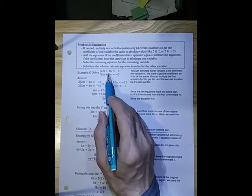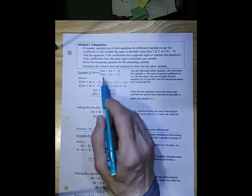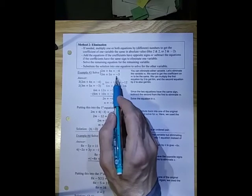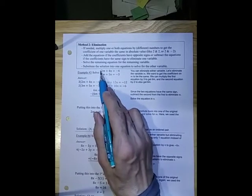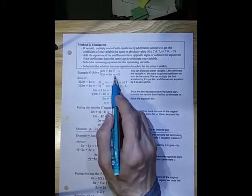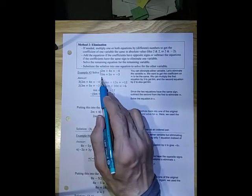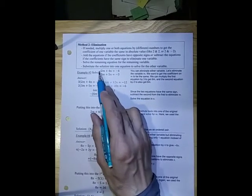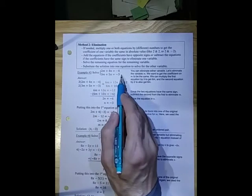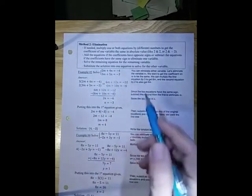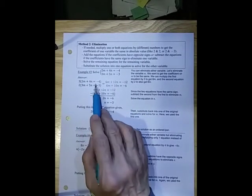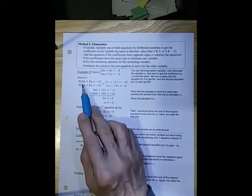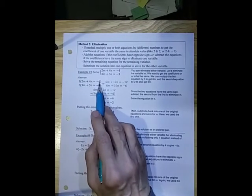So I have 2m plus 4n is equal to minus 4, 3m plus 5n is equal to minus 3. I'm going to get rid of the variable m, so I want these two to match. I can multiply this one by 3 and this one by 2, that would give me a 6 in front. I can get rid of n. I could multiply by 5 here and 4 here, they would both then be 20. Either way works. I chose to get rid of m. I multiply the first whole thing by 3, both sides.